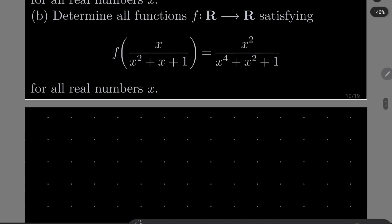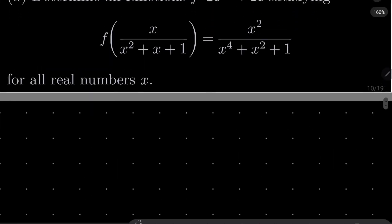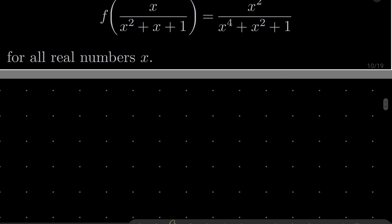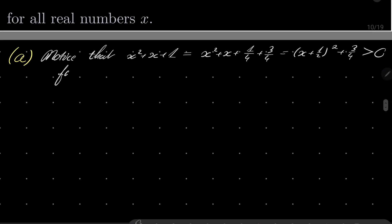All right, so first part A. First notice, notice that x squared plus x plus 1 can be written as x squared plus x plus 1 fourth plus 3 over 4, which is x plus 1 half squared plus 3 over 4, which is definitely greater than 0 for all real numbers x.